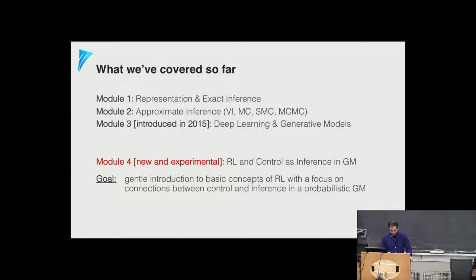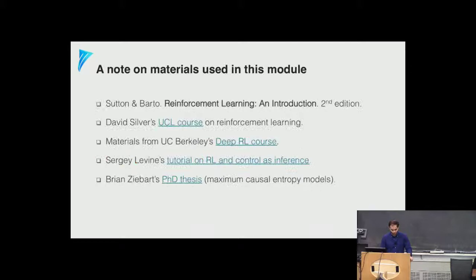We'll focus on the connection to inference and learning in graphical models. The material used in this module is mostly Sutton and Barto's book, David Silver's lectures, and a lot of material based on the work of Sergey Levine's group from UC Berkeley and his tutorial on RL and control as inference.